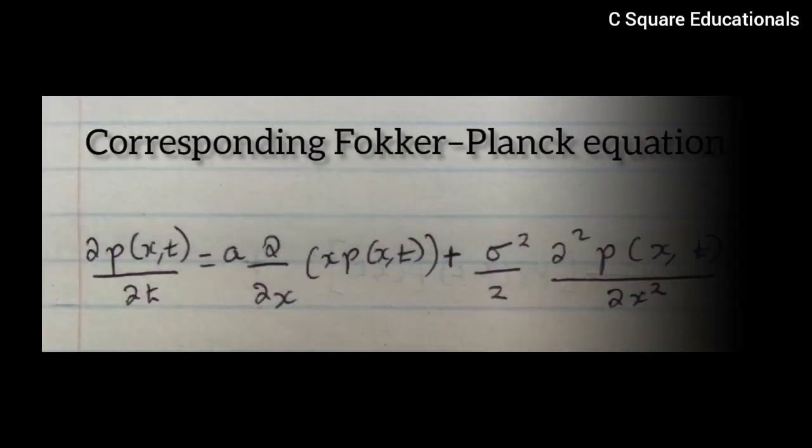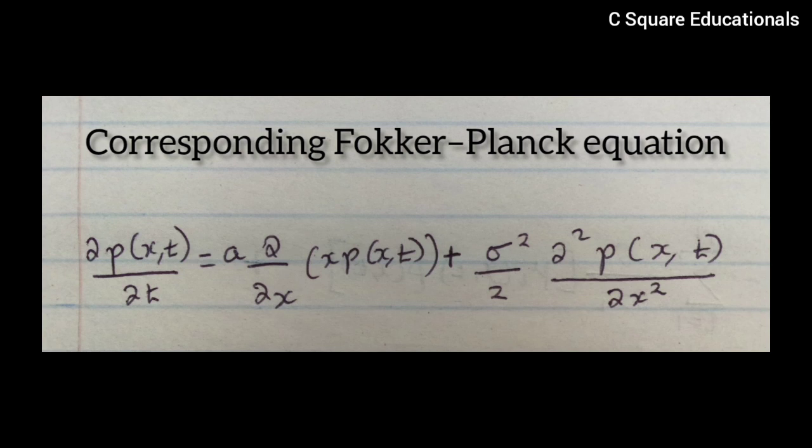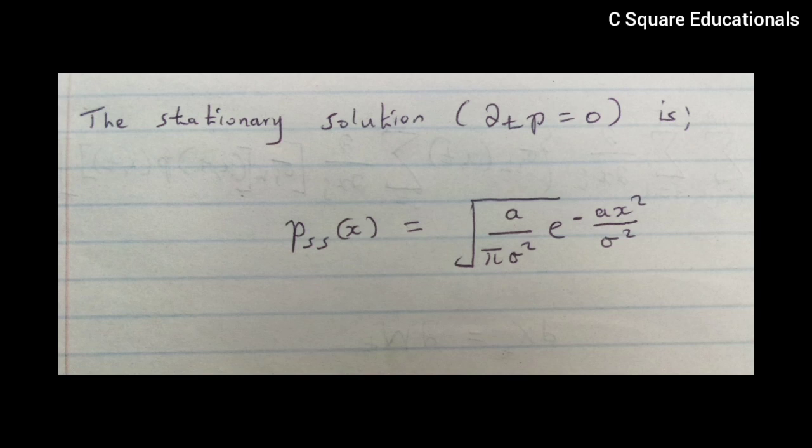The corresponding Fokker-Planck equation is partial p(x,t) on partial t equivalent to a partial on partial x of x p(x,t) plus sigma squared on two partial squared p(x,t) on partial x squared. The stationary solution with partial t equivalent to zero is p_s(x) equivalent to root a on pi sigma squared e raised to negative a x squared on sigma squared.